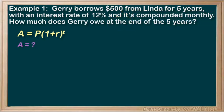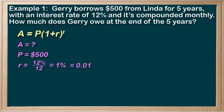Plugging in our numbers: P is 500. For r, the interest rate must be per compounding period — so what is the interest rate per month? If it's 12% per year, then for one month it's 12 divided by 12, which is 1% per month, or 0.01. For t, we need the number of compounding periods: five years times 12 months per year equals 60 compounding periods.